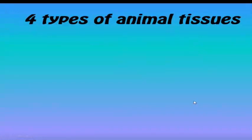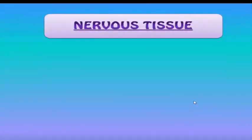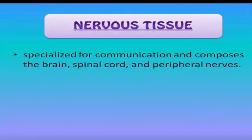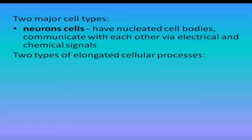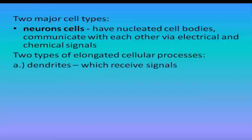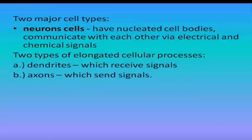For the last type of animal tissue, we have nervous tissue, specialized for communication. It composes the brain, spinal cord, and peripheral nerves. Nervous tissue has two major cell types. The first is neuron cells, which have nucleate cell bodies and communicate with each other via electrical and chemical signals. Neurons have two types of cellular processes: dendrites, which receive signals, and axons, which send signals.